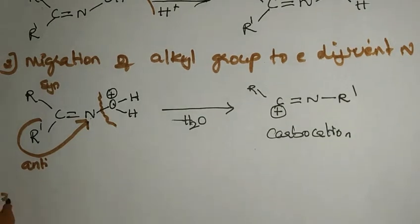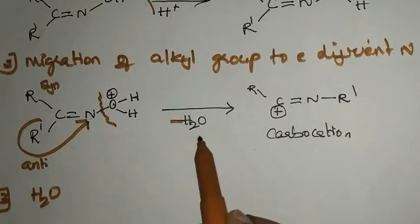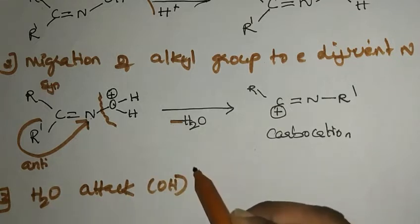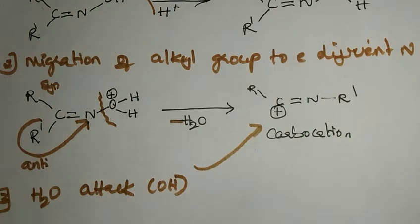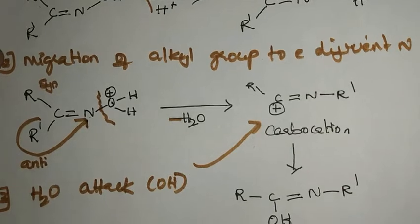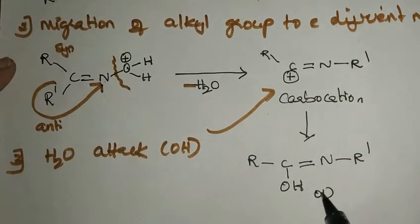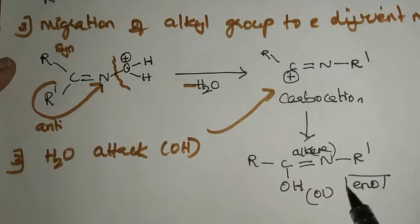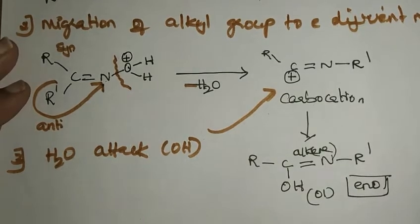Once the carbocation forms, we have a water molecule present. This water molecule will attack the carbocation — the OH from water attacks the carbocation. So we get an alcohol, and we also have an alkene, making this an enol.